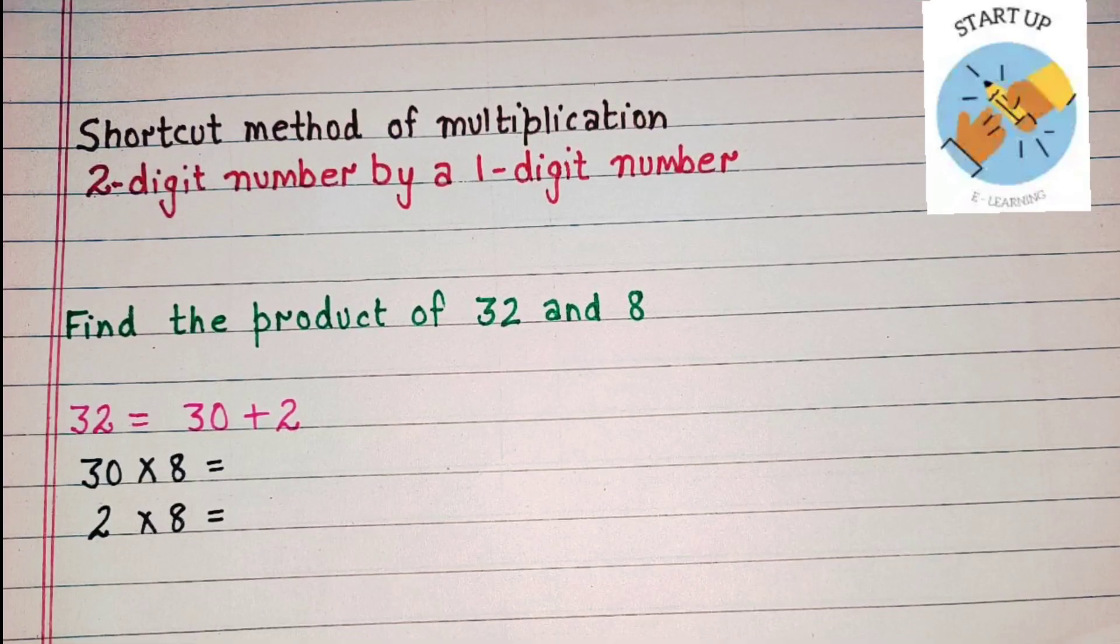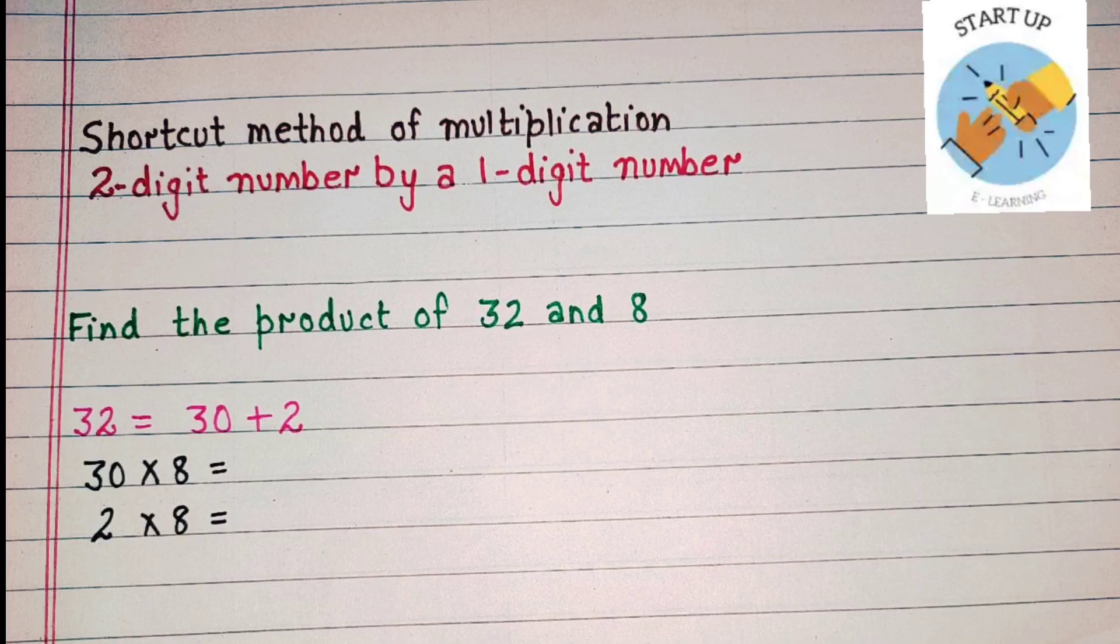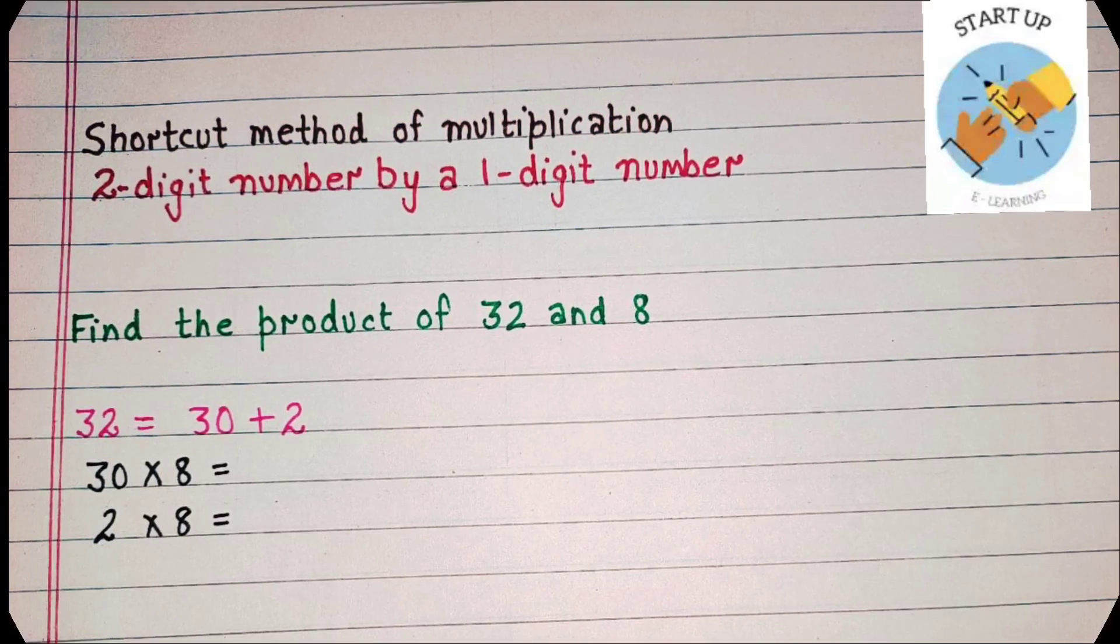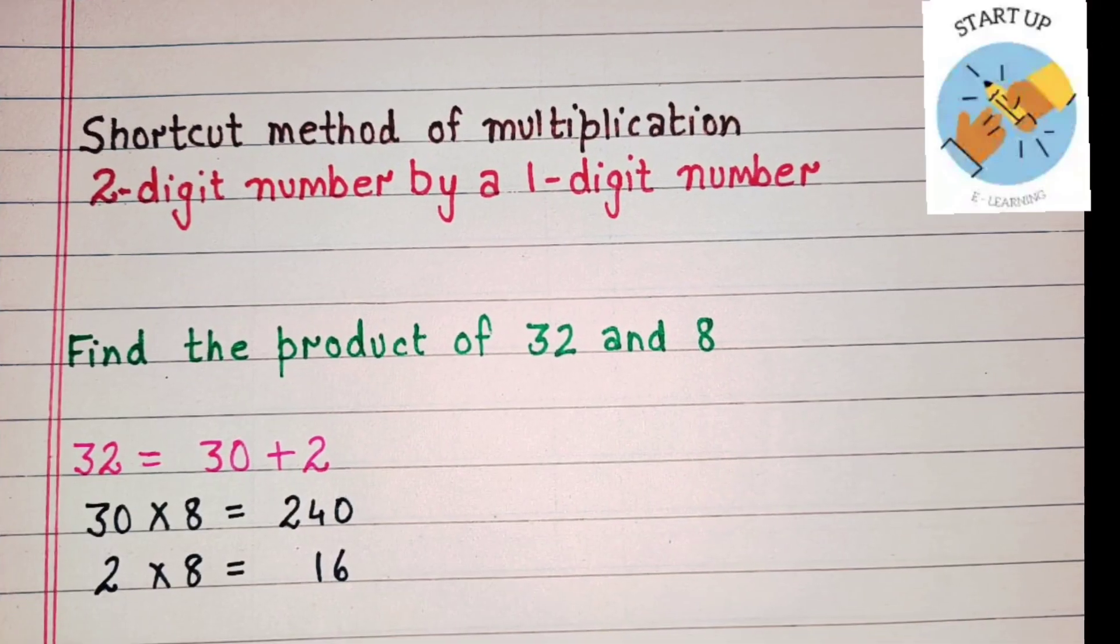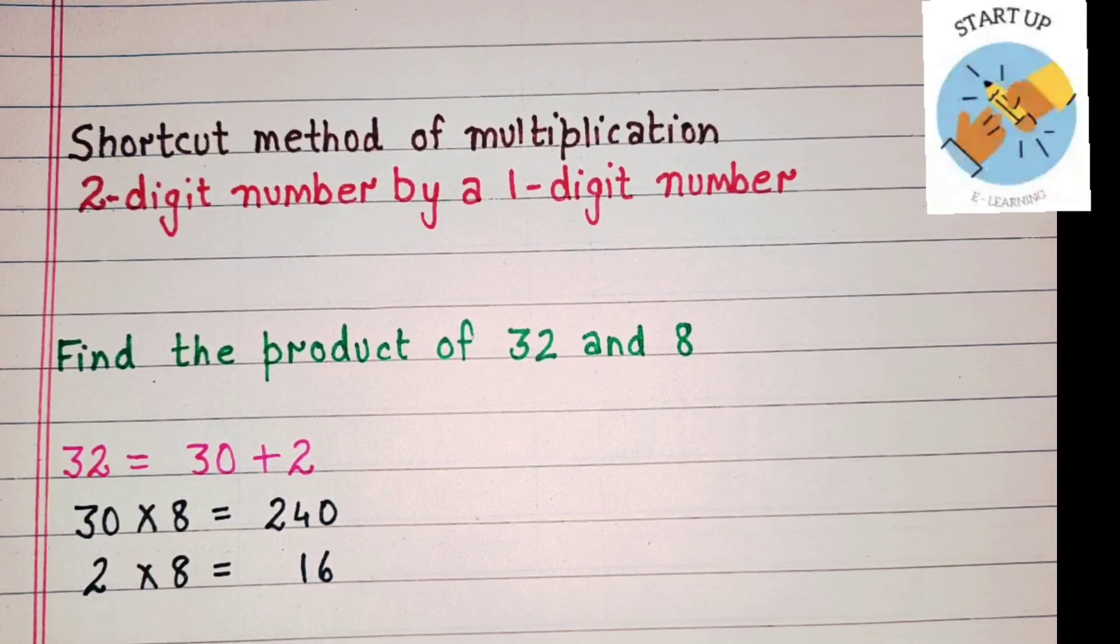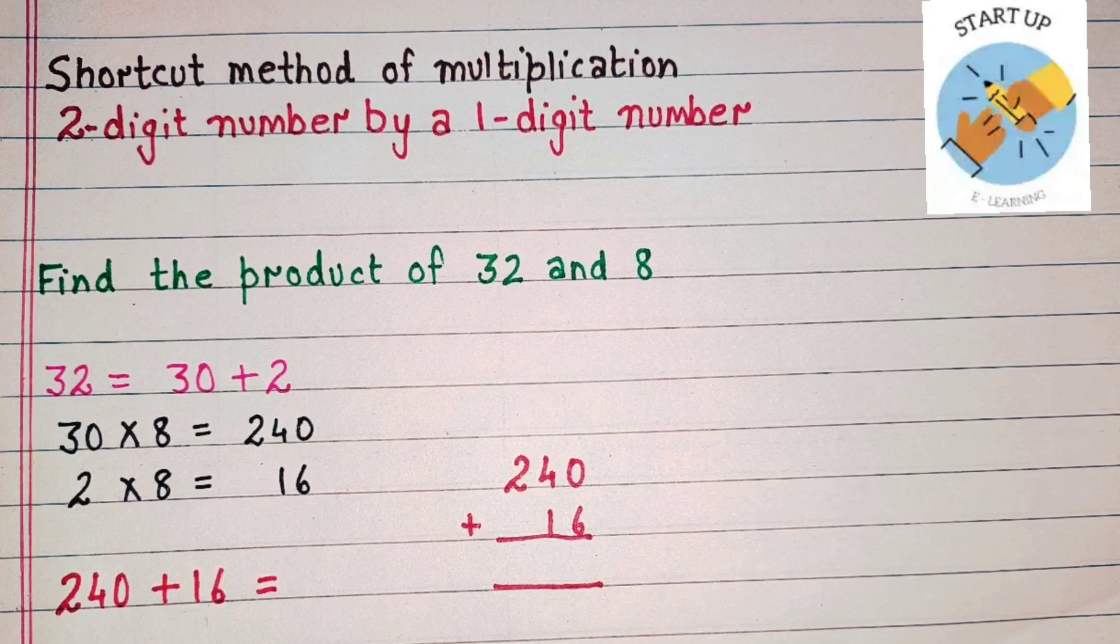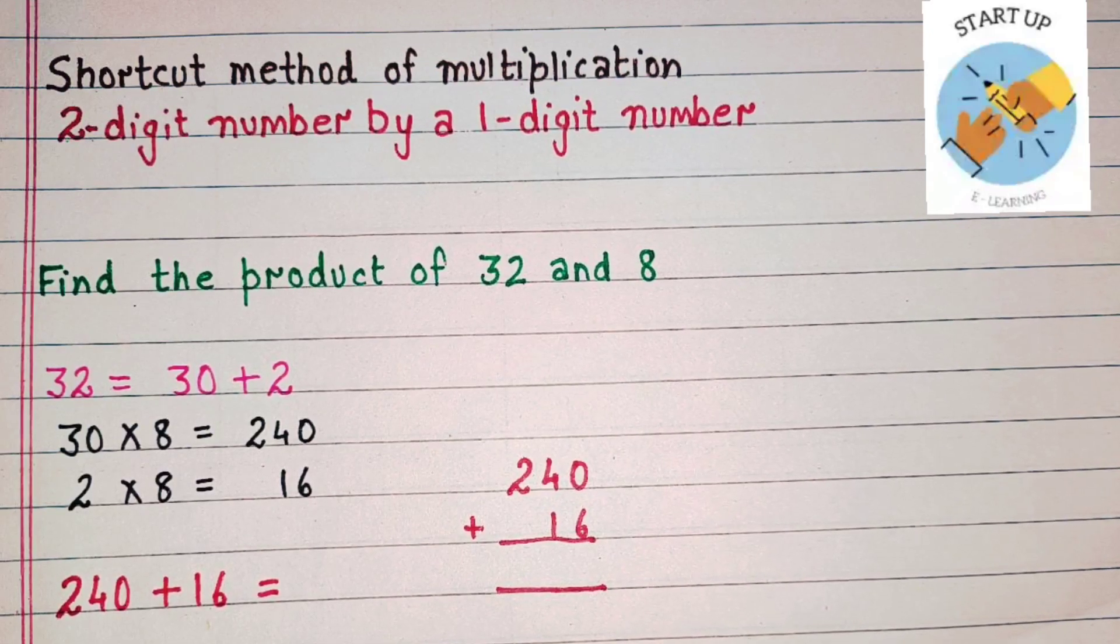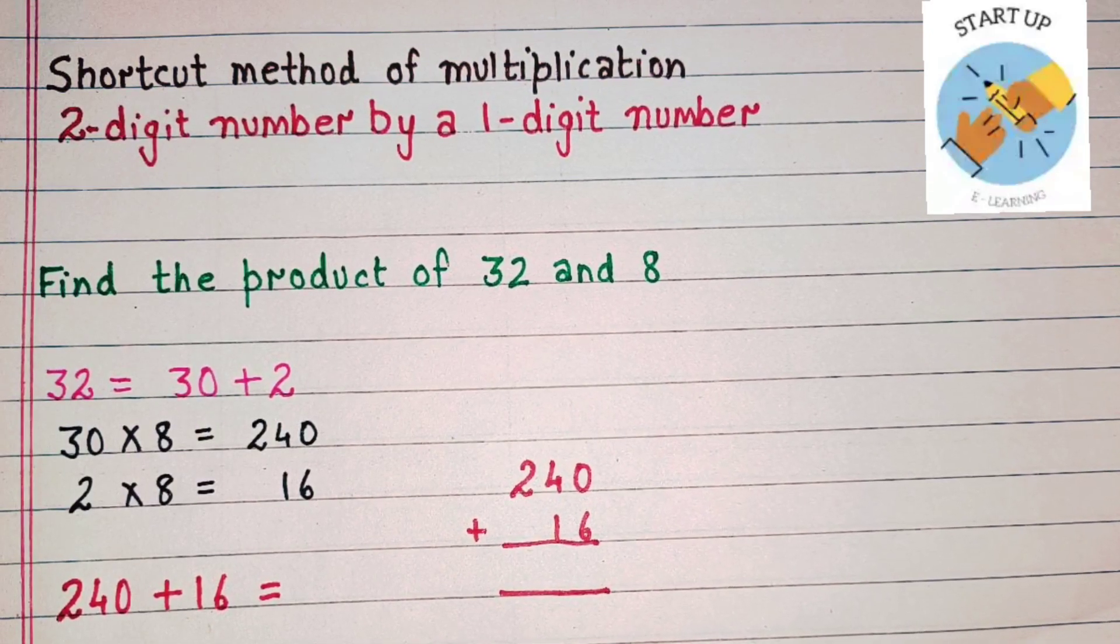Now, we will multiply 30 and 2 by 8 separately. 30 multiplied by 8 is equal to 240. 2 multiplied by 8 is equal to 16. Here, we will add these two products to get the final product: 240 plus 16.